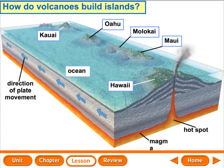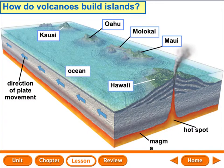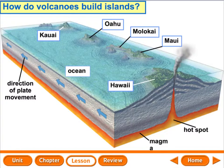How do volcanoes build islands? The Hawaiian Islands are an island chain — a line of volcanic mountains. Scientists know the Hawaiian Islands are sitting on a tectonic plate that is moving, and as it moves, it passes over something called a hot spot. Over millions of years, the lava that erupts from that hot spot forms a mountain. Eventually the mountain grows taller than the ocean surface, rising above it. As the plate moves the island away from the hot spot, new land begins to form, and the older islands are pushed off.